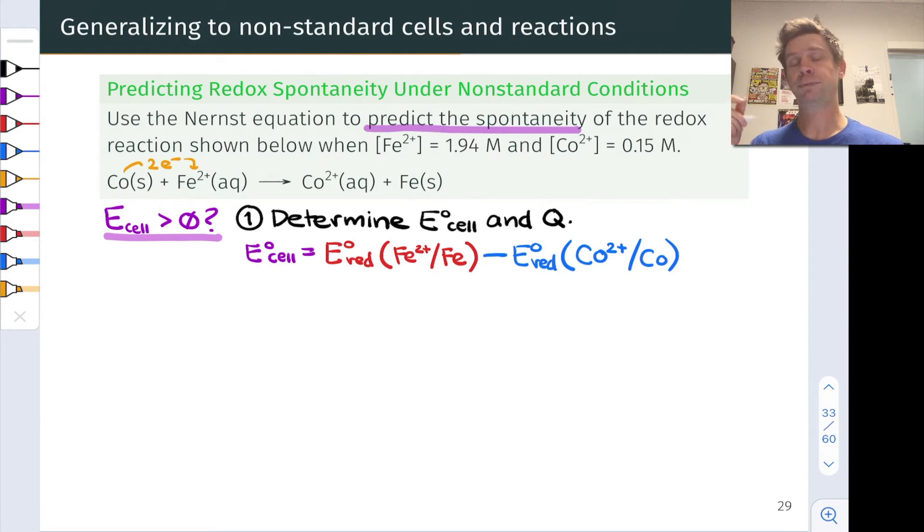Minus the reduction potential at the hypothetical anode, or for the oxidation process, which is the oxidation of cobalt metal to Co2+. We can look these up in a table of standard reduction potentials, and when we do that, we arrive at a standard cell potential of -0.17 volts.